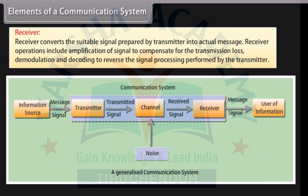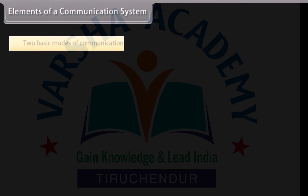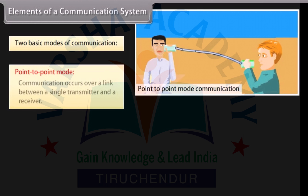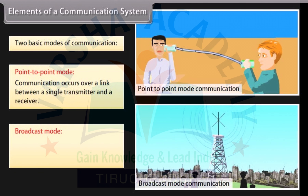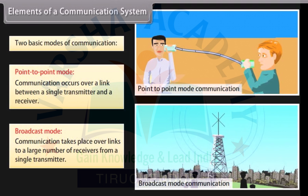The receiver converts the suitable signal prepared by the transmitter into the actual message. Receiver operations include amplification of signal to compensate for transmission loss, demodulation and decoding to reverse the signal processing performed by the transmitter. There are two basic modes of communication: point-to-point mode, where communication occurs over a link between a single transmitter and a receiver, and broadcast mode, where communication takes place over links to a large number of receivers from a single transmitter.